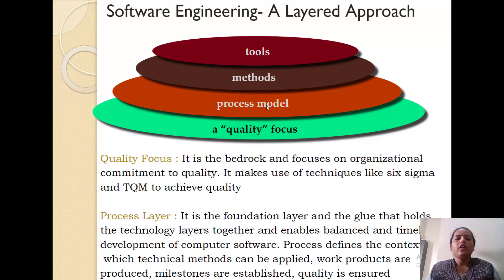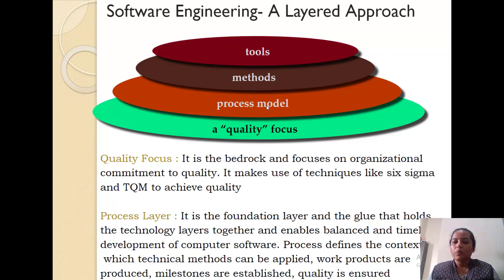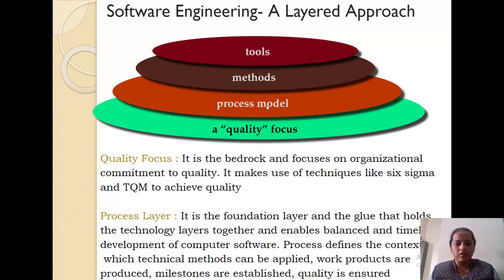Hello friends. In today's session I will be discussing about how software engineering is considered to be a layered approach. There are basically four layers on which software engineering stands. The base layer is called the quality focus, above it we have the process model, above that we have the methods, and at the top of the layered approach sits the tools. Let us discuss every layer one by one.